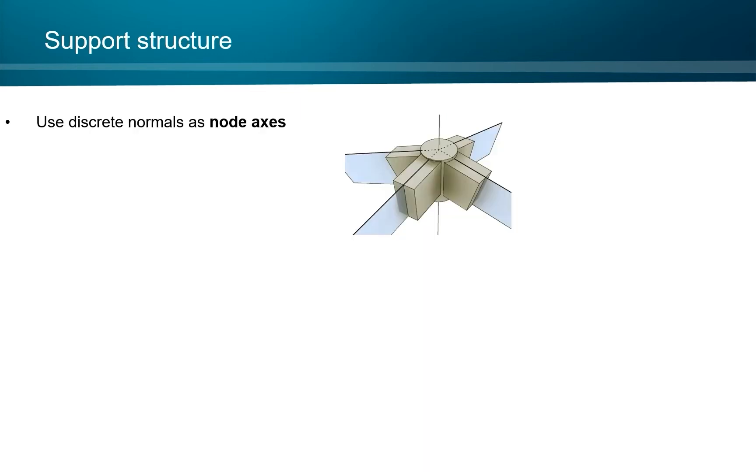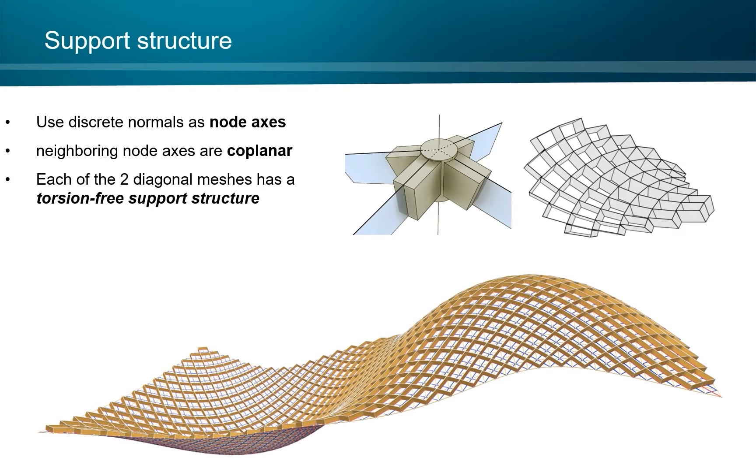There, we just use the discrete normals as node axes. And now we have neighboring node axes which are coplanar. So we end up with a torsion-free support structure for both of the two diagonal meshes. Of course, we will only use one in a practical application.